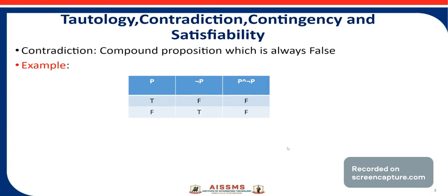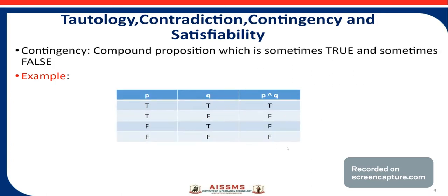Now the next one is contingency. A compound proposition which is sometimes true and sometimes false is called a contingency.